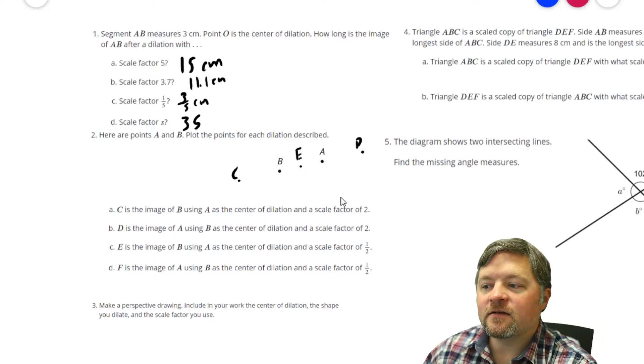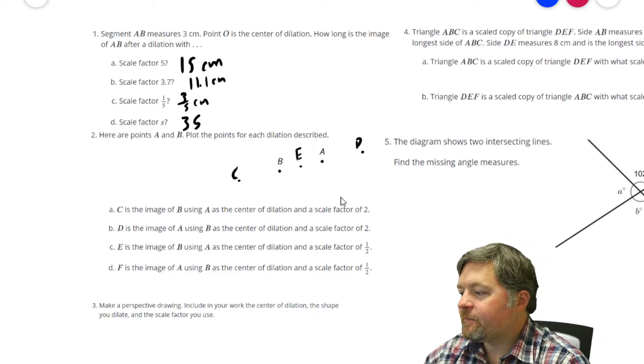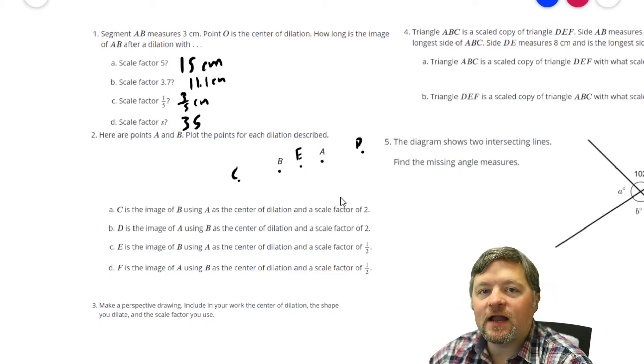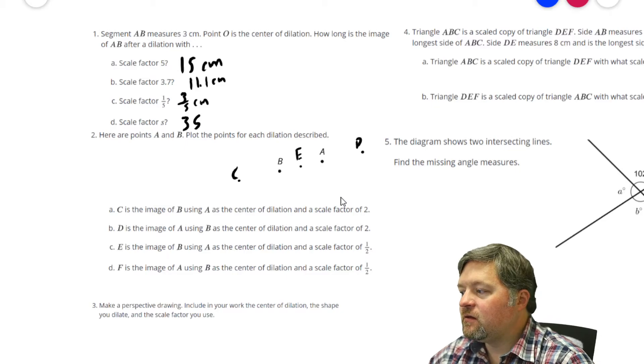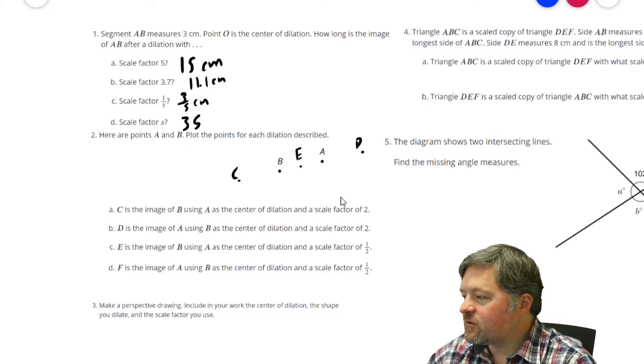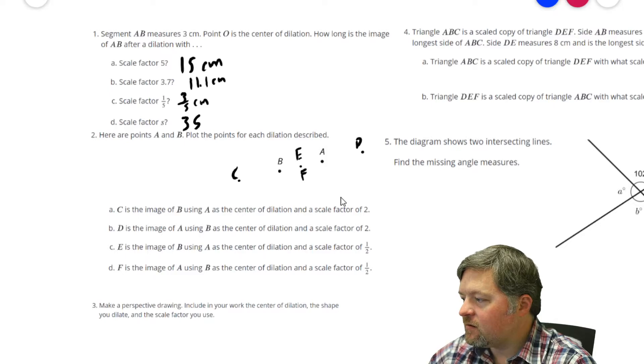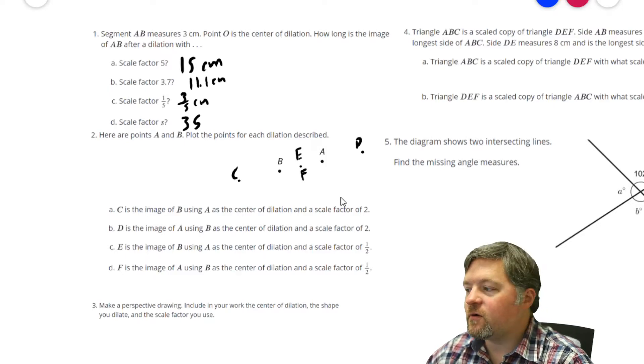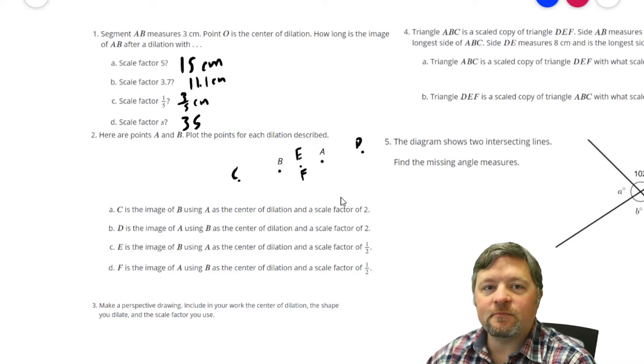Now, F is the image of A using B as the center of dilation and the scale factor of one-half. That is actually in the same place as E, because if we go half the distance, it doesn't matter which side we're going from. E and F are in the same place.